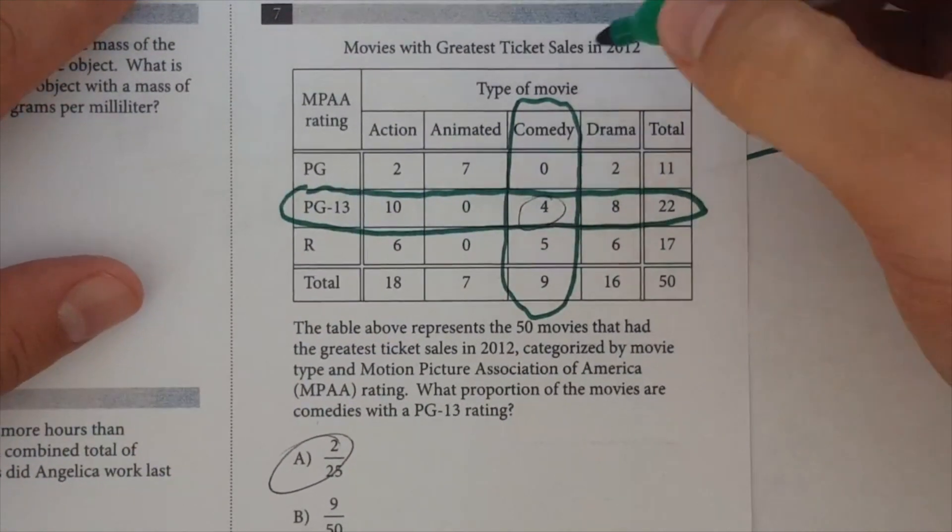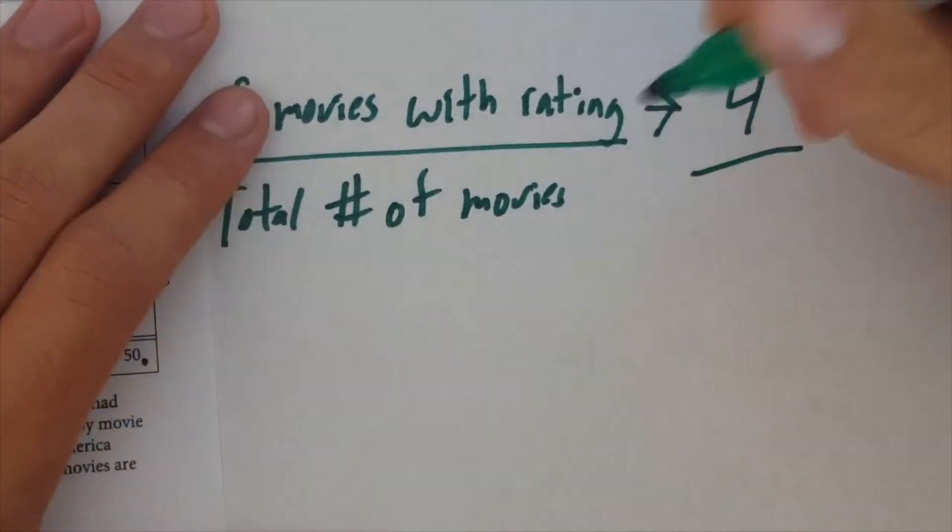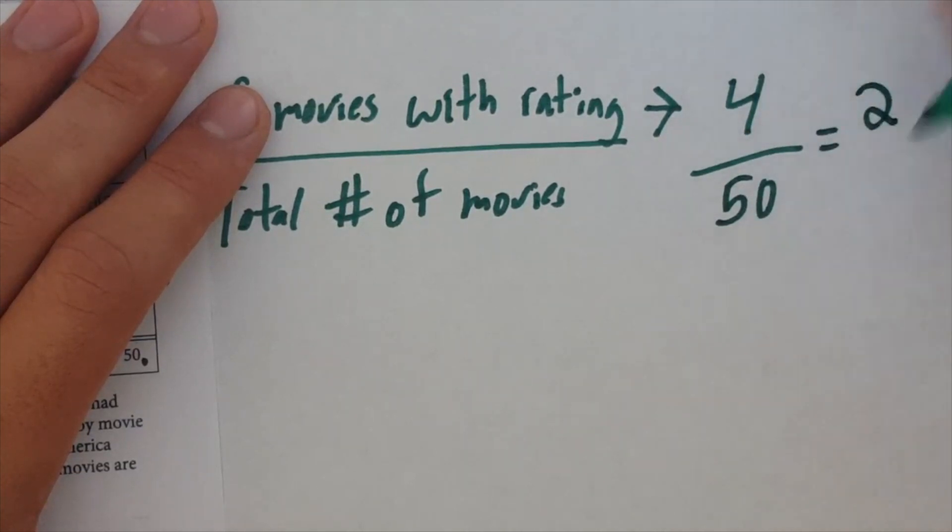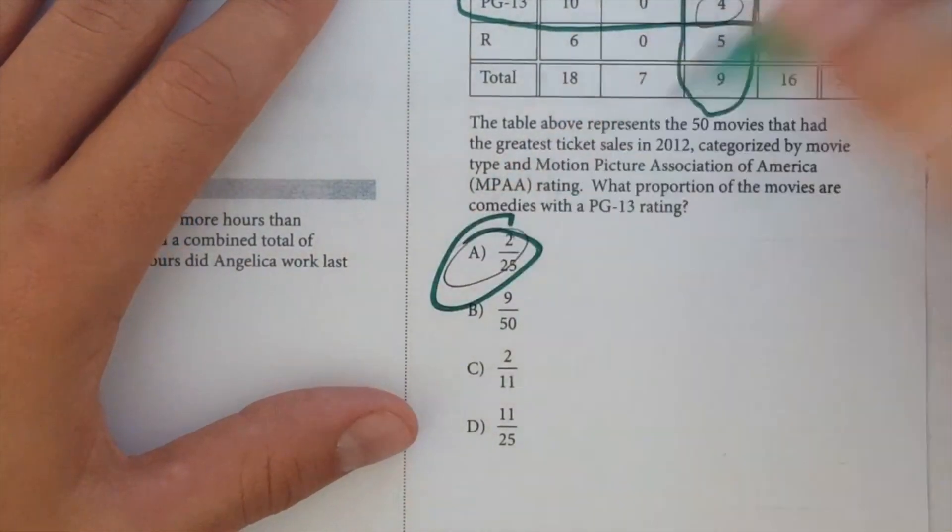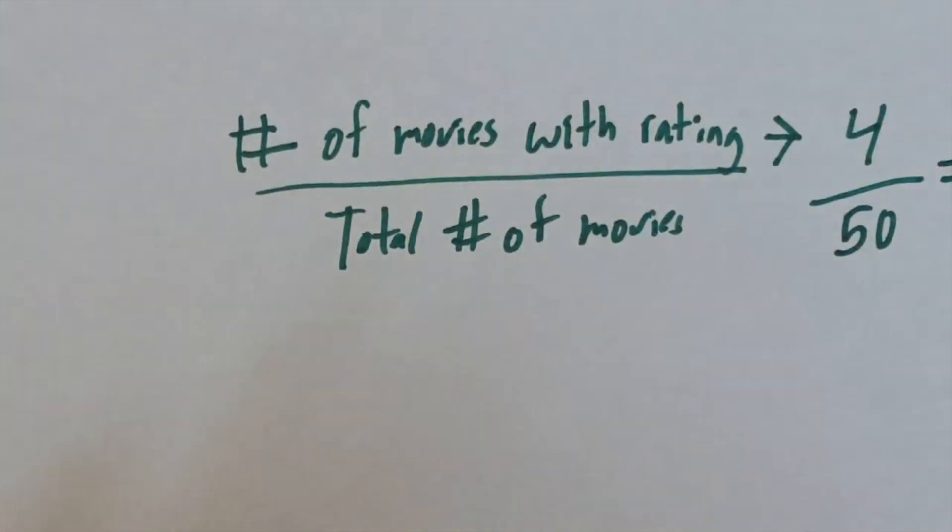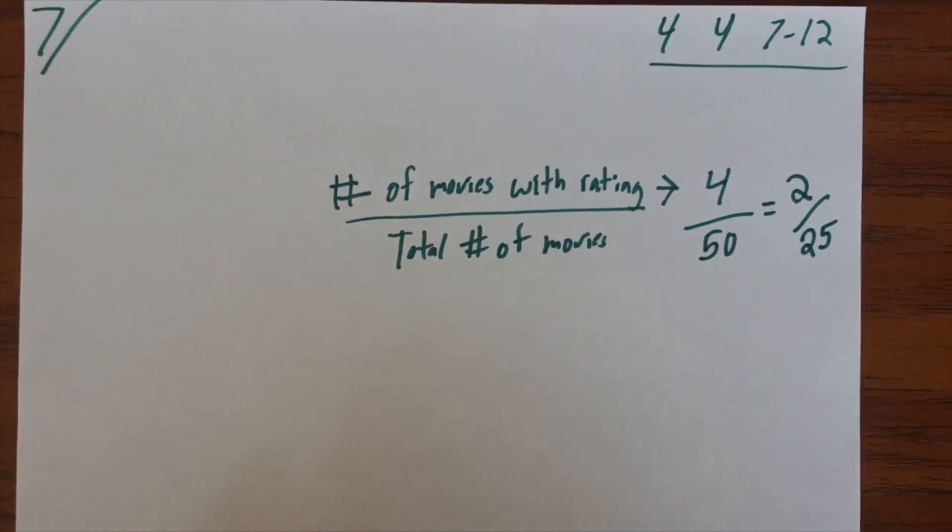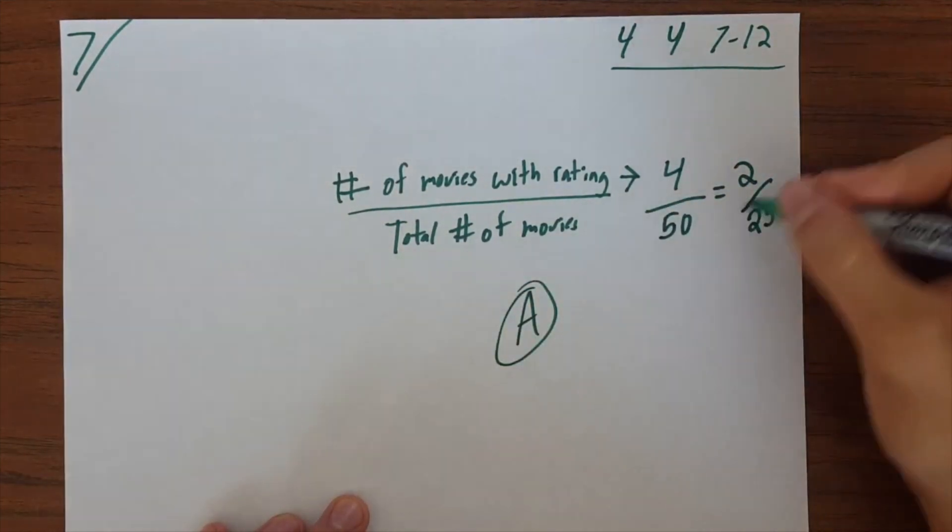And now we just need the total number of movies. So, if you look here, total is 50. Alright, so that's 4 divided by 50, which is 2 divided by 25. And that's going to be A. Okay, so that's what 7 is. 7 then is A. Let me just do it back out here.